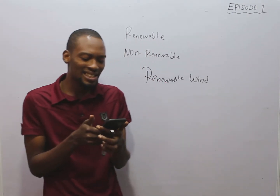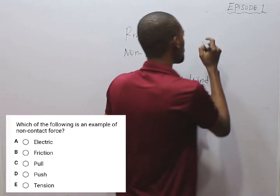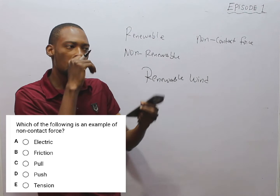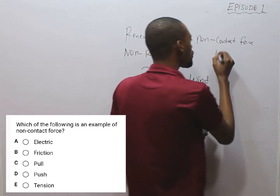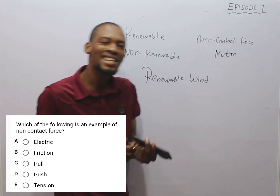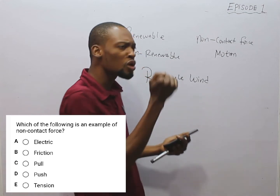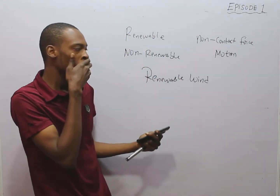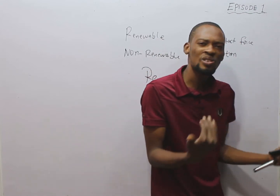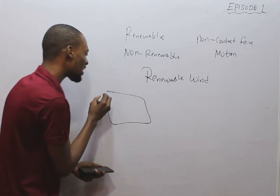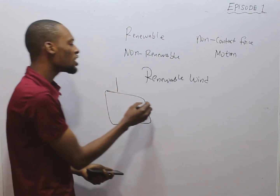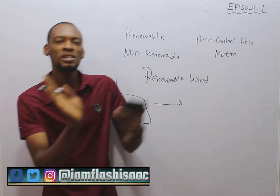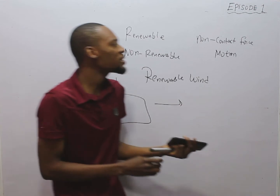The next question asks: which of the following is an example of a non-contact force? Talking about force, motion should come to mind. Motion is the change in position of a body with time, and the cause of motion is force. Force is the agent that changes or tends to change the position of a body. Newton's first law states that a body at rest will continue to be at rest, and if already moving will continue to move, unless acted upon by a force. Force can be contact or non-contact.